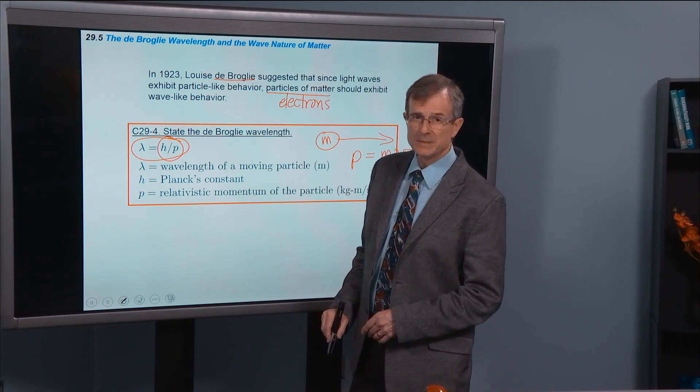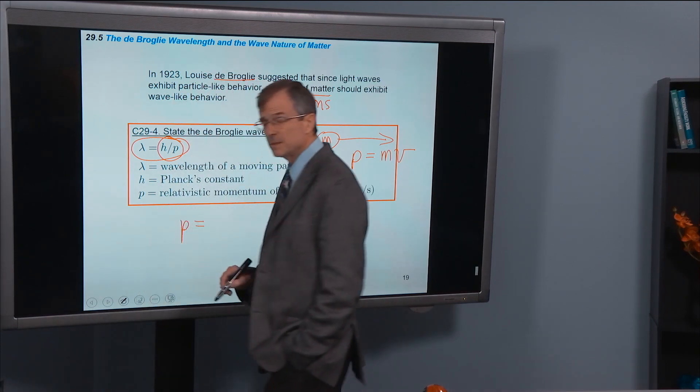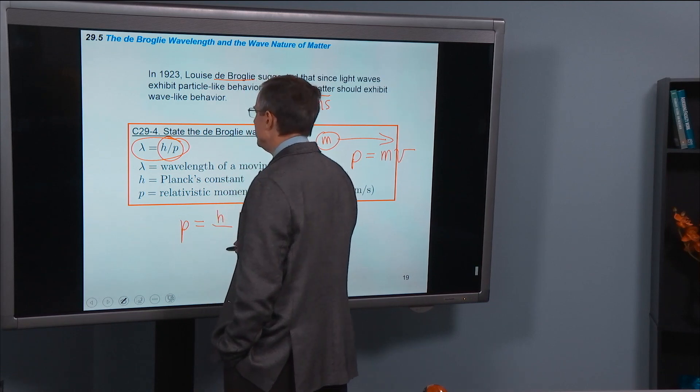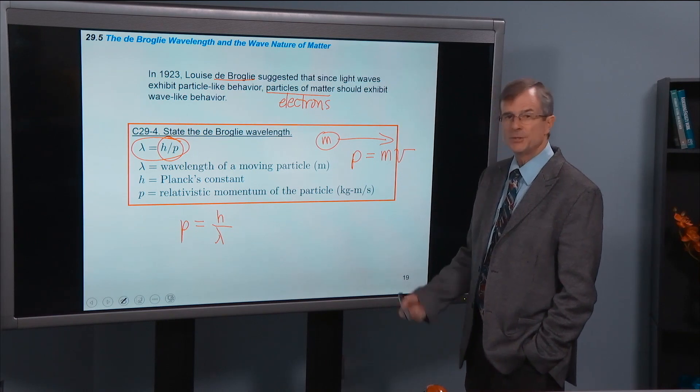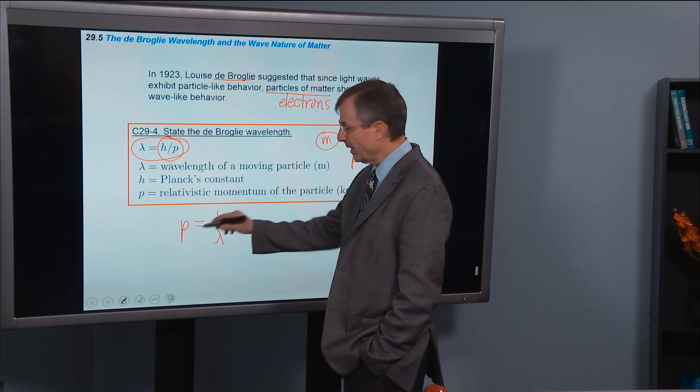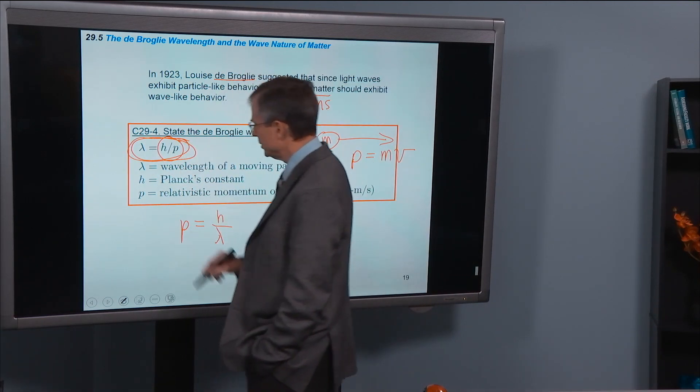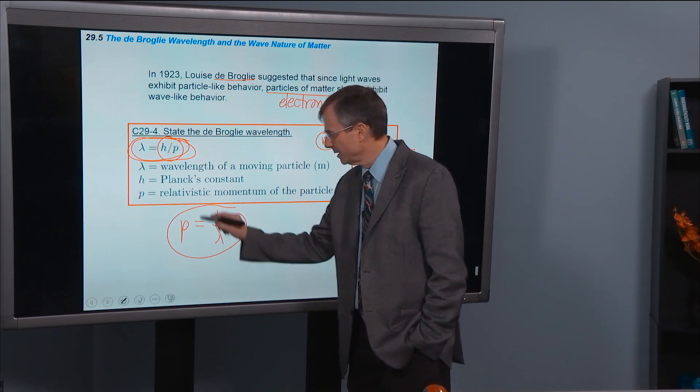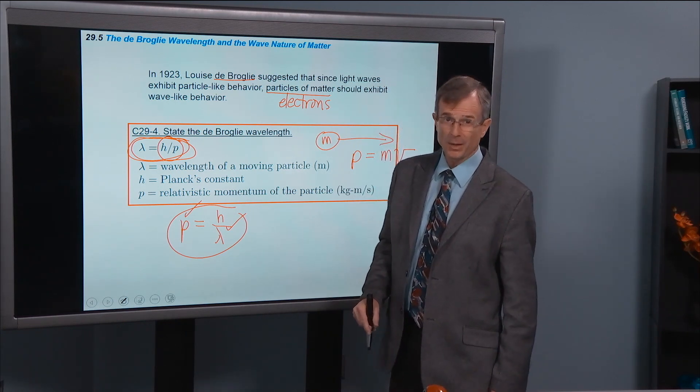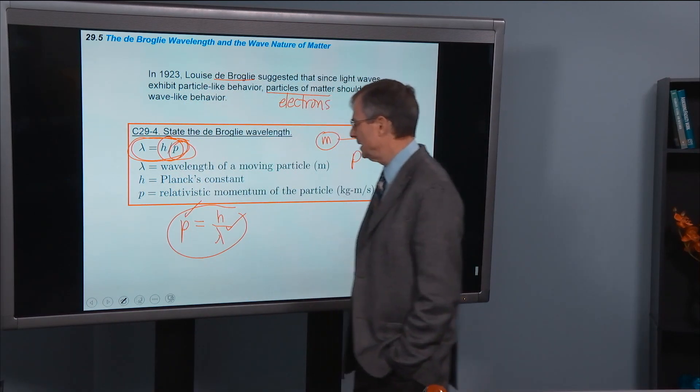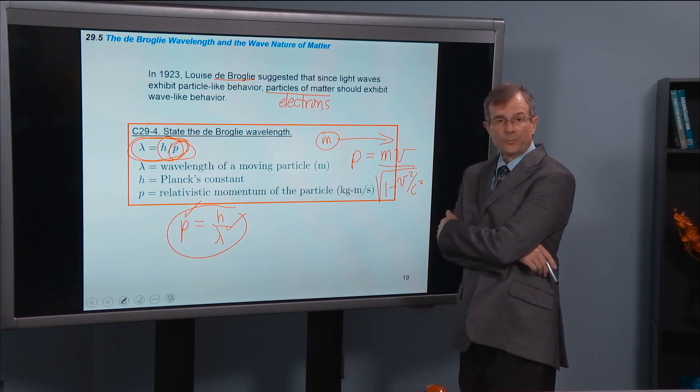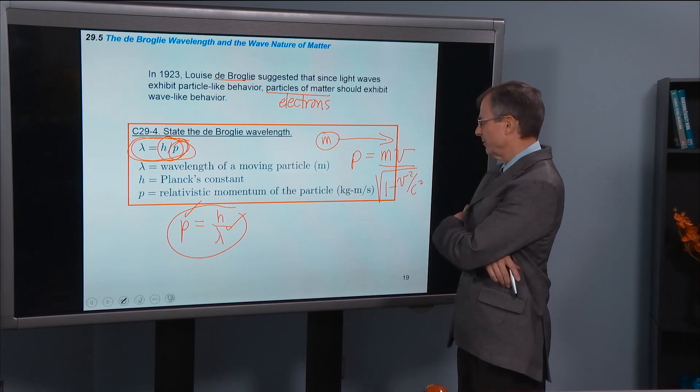You might say, well, hang on, that looks a little bit similar to the momentum of the electron. Remember, I'm sorry, the momentum of light. Remember that in a couple of concepts ago, that the momentum of light of wavelength lambda was given by H divided by lambda. Well, if you just reverse this, multiply both sides by lambda, divide both sides by P, then you get this relationship, exactly the same relationship that we had before between the momentum of light and its wavelength. But now it's turned on its head. It's saying, now we're talking about a particle, a particle of momentum P, the relativistic momentum.